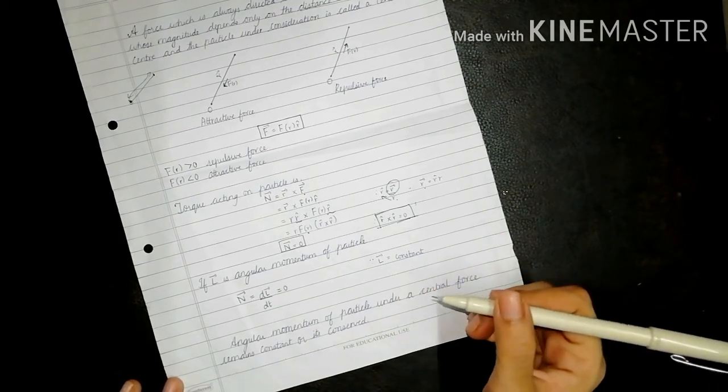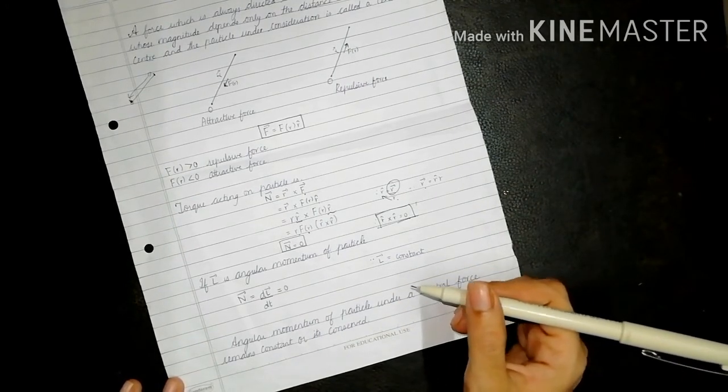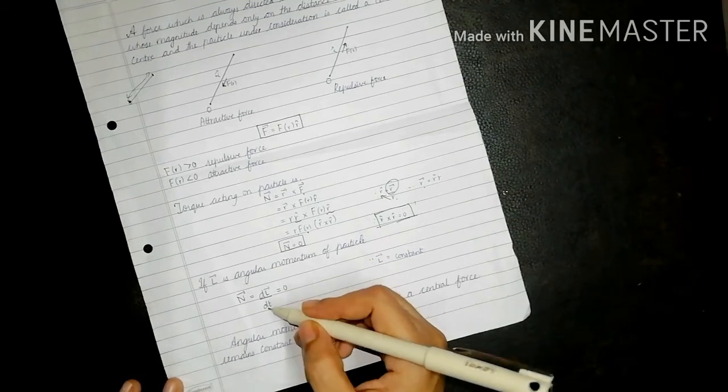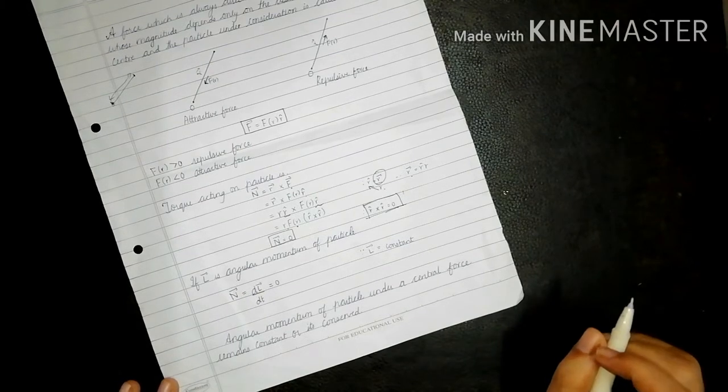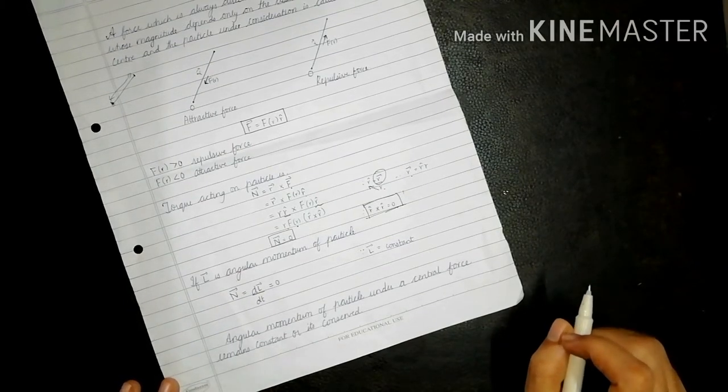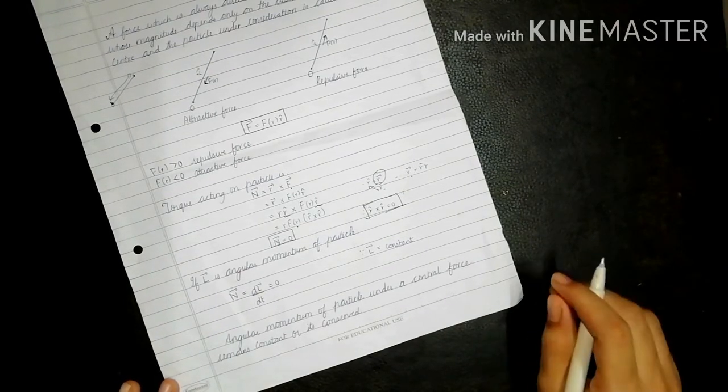So n bar equals 0. Therefore, angular momentum of particle under a central force remains constant or it is conserved.